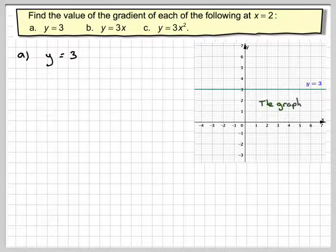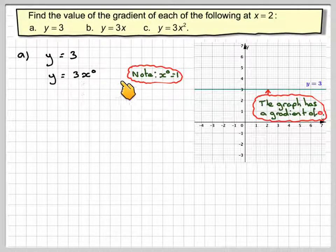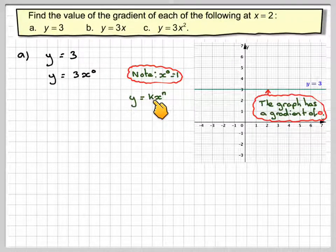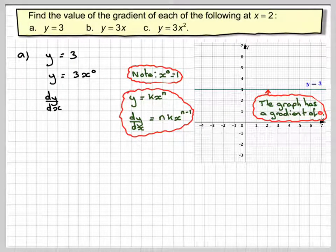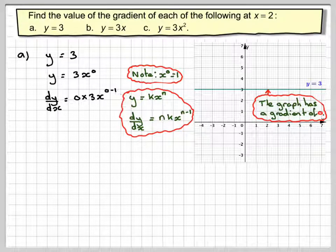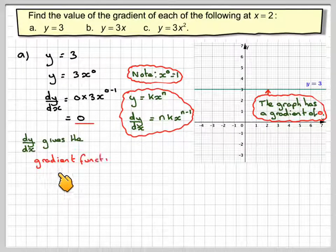So if we now apply the rules of differentiation — we rewrite this as y is equal to 3 times x to the 0, because x to the 0 is equal to 1. Then applying the rule of differentiation: y is equal to kx to the n gives dy/dx equal to n·kx to the n minus 1. So dy/dx will be 0 times 3x to the negative 1. Now 0 times anything equals 0, and that corresponds to what we found in the graph: the gradient at x equals 2 is 0. So dy/dx gives the gradient function.